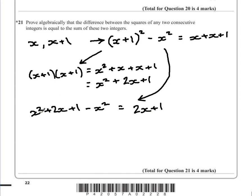If we simplify this, the x² and the negative x² cancel each other out. So we have 2x + 1 equals 2x + 1. Therefore, we've just proven that this statement is true.